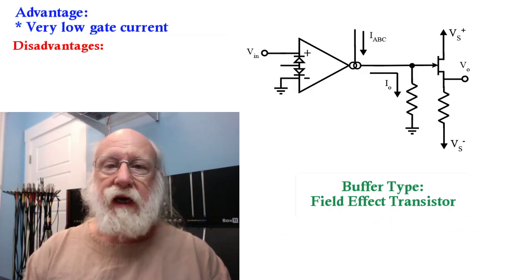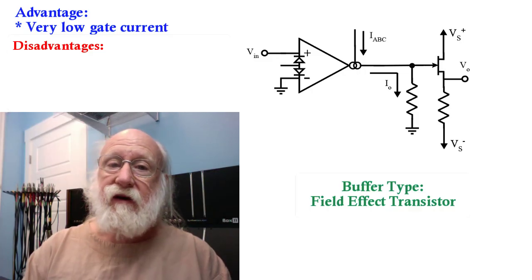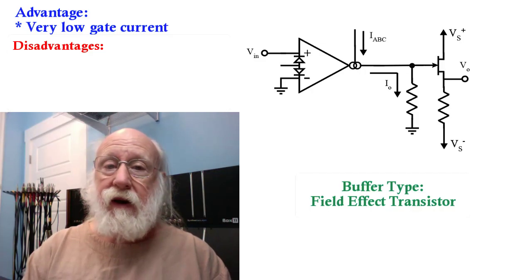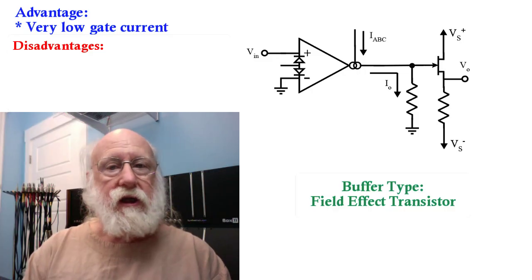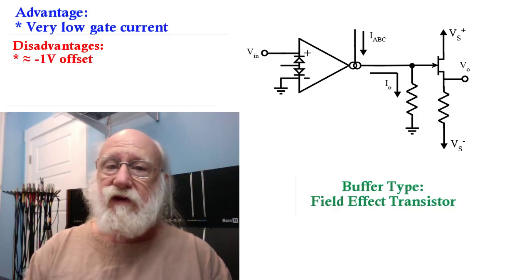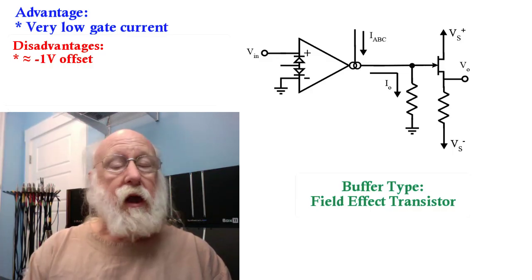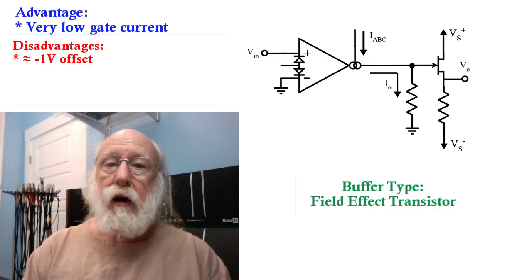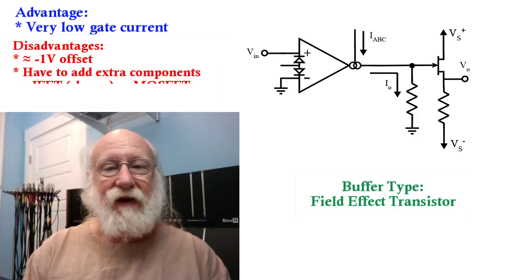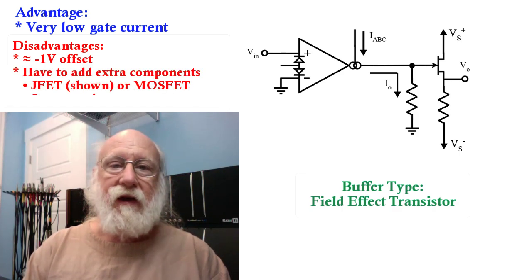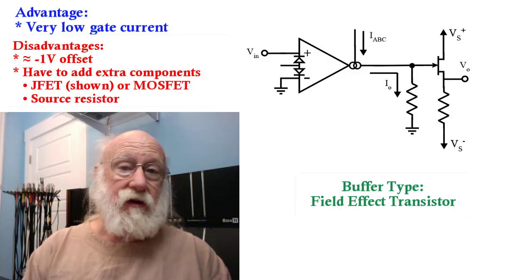The disadvantages of using an FET as the buffer are, first of all, it has one of the same disadvantages that the built-in Darlington pair has, which is that it does add a small negative offset to your output voltage, typically around minus one volt. The other disadvantage is that you have to add a couple more components. You have to add the FET and you have to add the resistor that connects to the source.